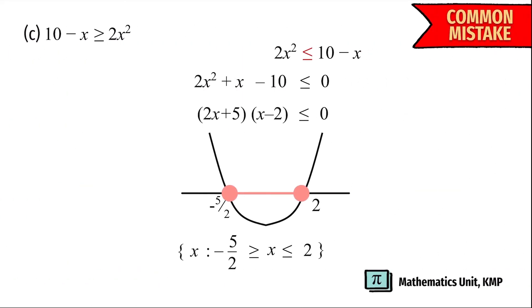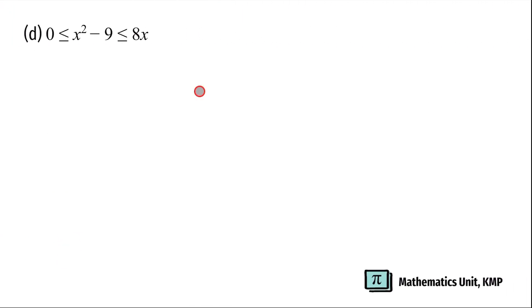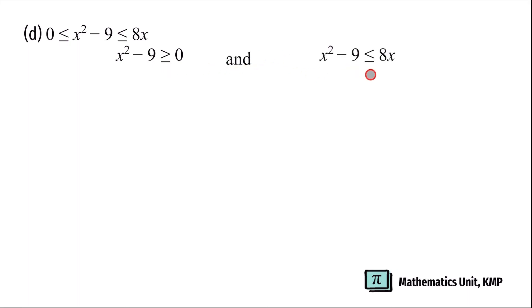This is a common mistake that students make when writing the wrong sign. This is an example of compound inequalities, which can be written as x² - 9 ≥ 0 and x² - 9 ≤ 8x. We can use the intersection symbol instead of the word 'and'.